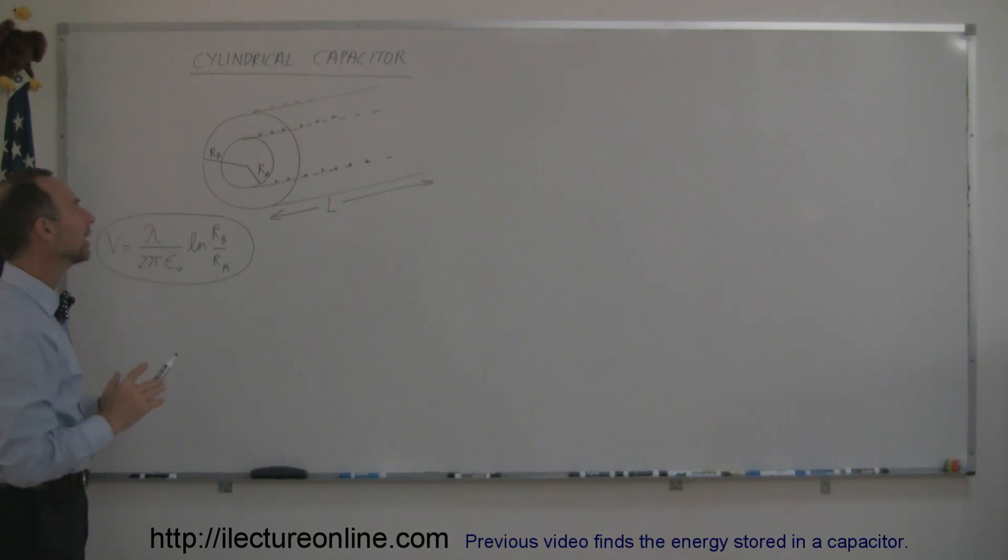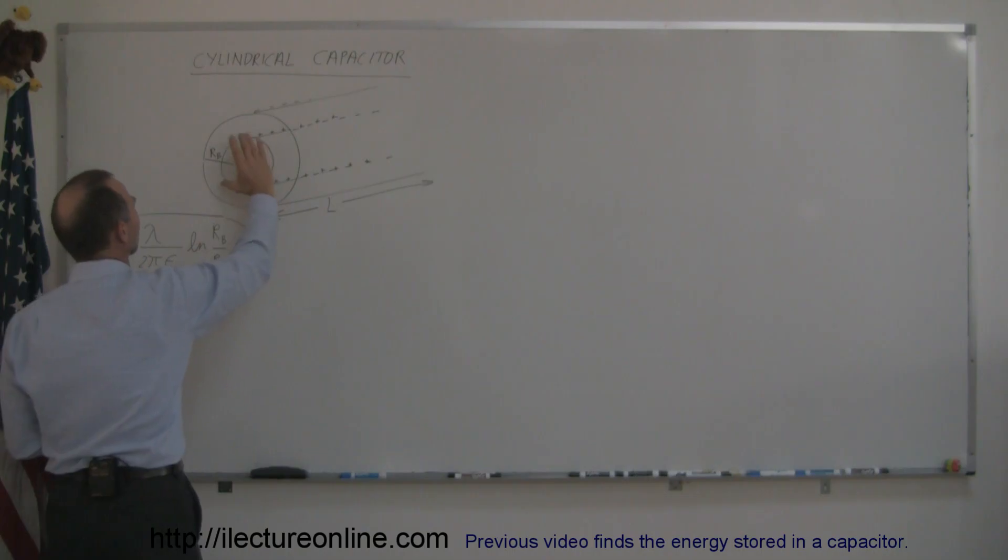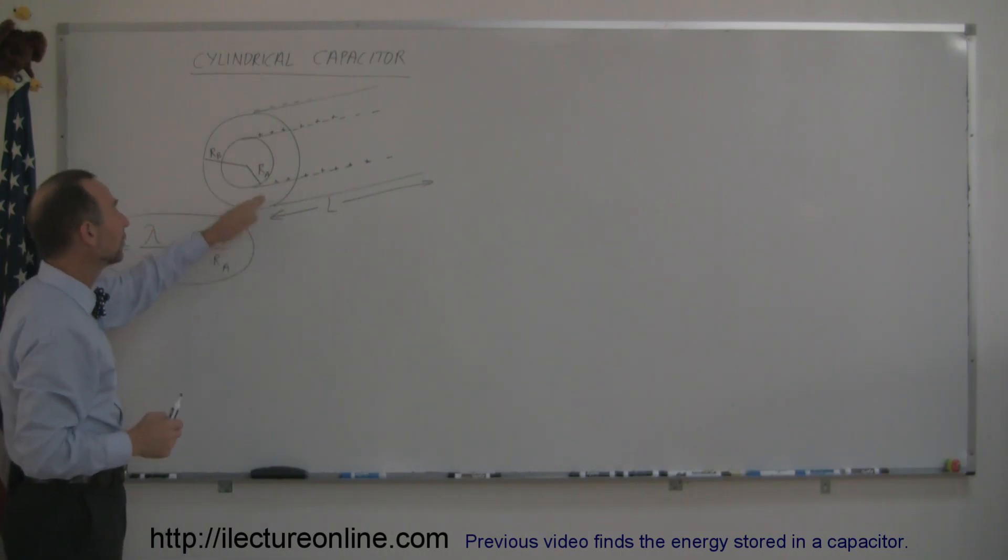That is a little bit misleading because if the positive charge is on the inside, then the potential would decrease as you go farther away, and going from a to b, that would be a negative voltage change, and going from b to a would be positive voltage change, but here we're really only concerned about the potential difference.